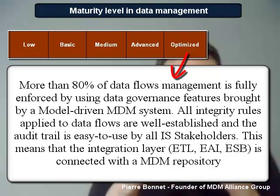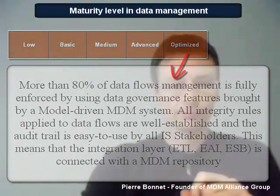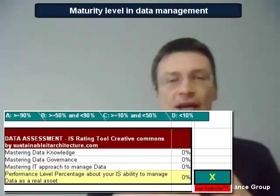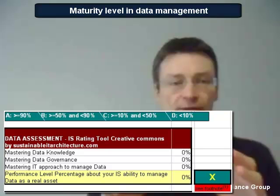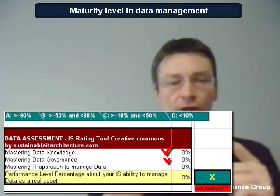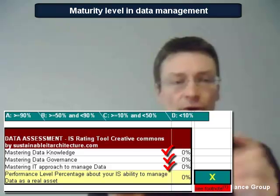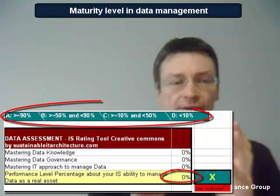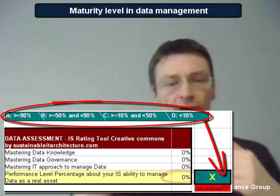This means that the integration layer — for example, EAI — is connected with the MDM repository. At the end of the assessment of your data management, you obtain a performance level percentage applied to each domain: data knowledge, data governance functions, and data IT integration. A consolidated percentage level is computed and translated into a letter from A to D, providing your situation within the maturity model.